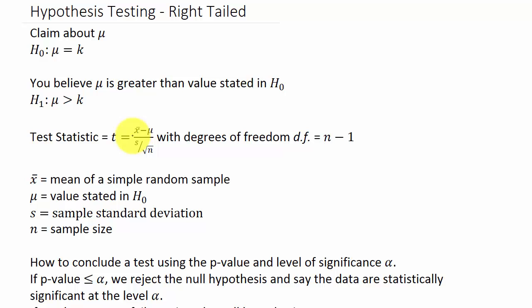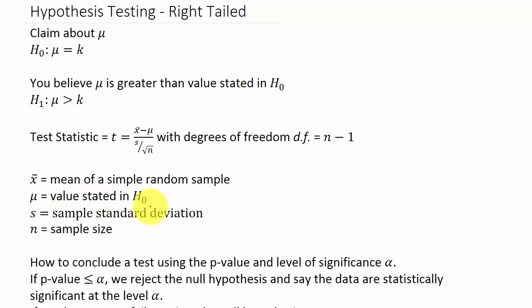The formula is: t equals x-bar minus mu, over s divided by the square root of n, and the degrees of freedom is n minus one. We need the degrees of freedom to look up values in the Student's t distribution table. x-bar is the mean of a simple random sample, mu is the value stated in the null hypothesis H naught, s is the sample standard deviation — since we don't know sigma, we only know the sample standard deviation — and n is the sample size.